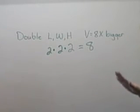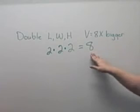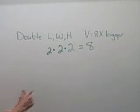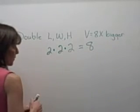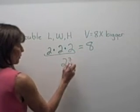So when you double all three dimensions of a rectangular prism, it's always going to be eight times bigger. You know something else? Two times two times two is actually two to the third power.